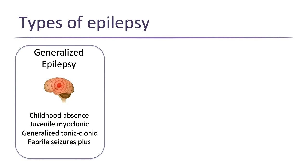You may have heard of some of these: childhood absence epilepsy, juvenile myoclonic epilepsy, and febrile seizures plus. Febrile seizures are also very common — but if you never have another seizure type, it doesn't count as epilepsy because it usually just happens in childhood and goes away. Febrile seizures plus means you do then have additional seizure types later in life.